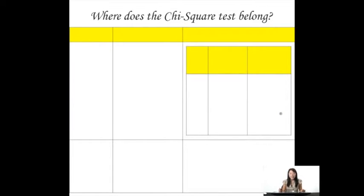So where does the chi-square test belong? I know it's been a while since we've looked at this, if you're going in order with the videos, but I think it's good to stop right now and think, okay, where have we come from? Where are we now?